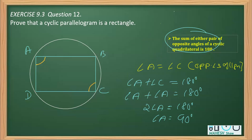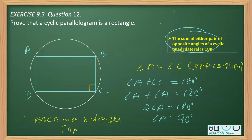We have now proved one angle of this parallelogram as 90 degrees. A parallelogram whose one angle is 90 degrees is a rectangle. Therefore, ABCD is a rectangle. The reason you write is: a parallelogram whose one angle is equal to 90 degrees is a rectangle. This is what we did to prove in this question.